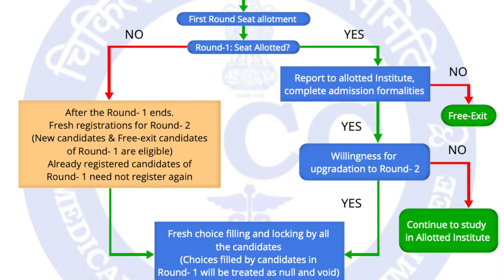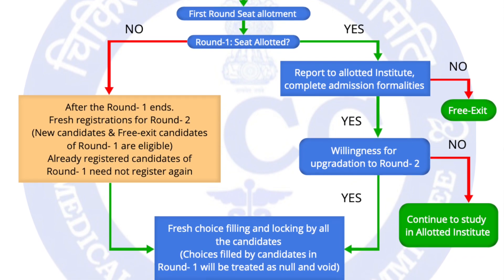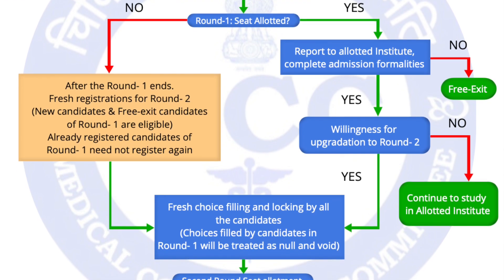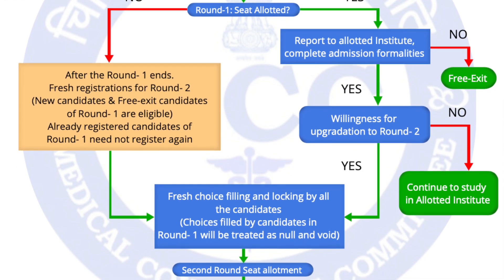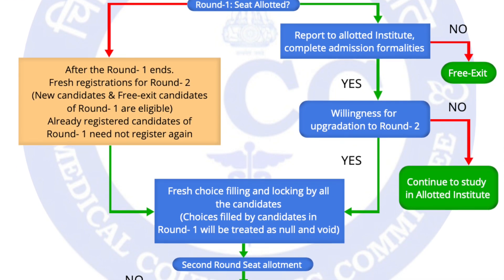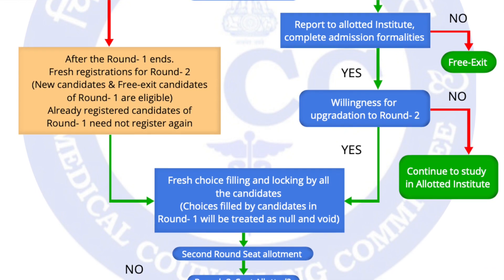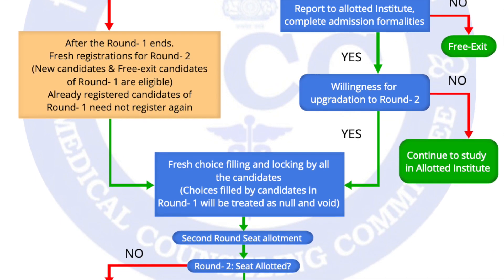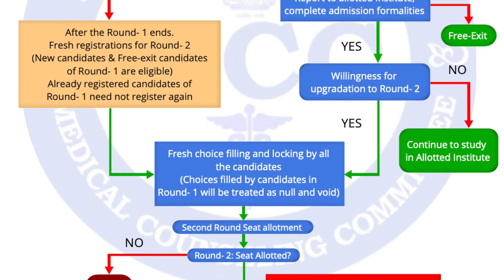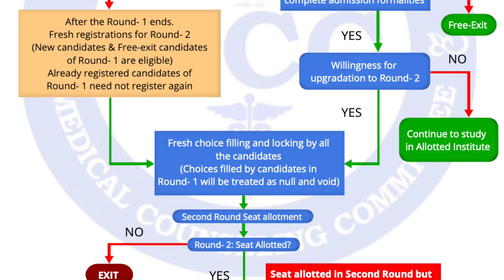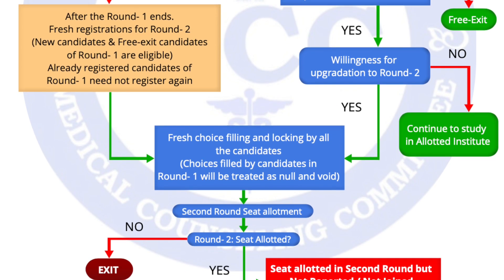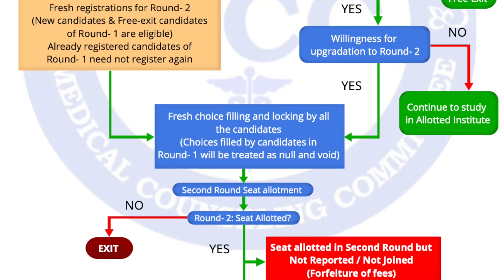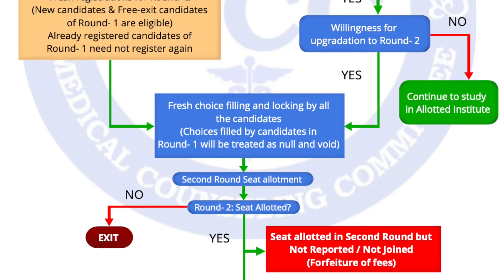If a seat is allotted in round one, the candidate has to report to the allotted institute and complete the admission formality. If the candidate is not willing to opt for the seat, they have a free exit and the fee will not be forfeited. If the candidate is willing for upgradation in round two, they need not register again. Already registered candidates of round one need not register again.